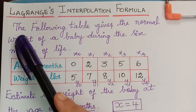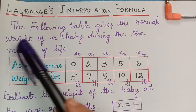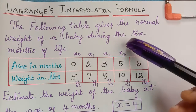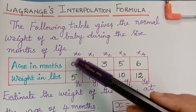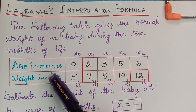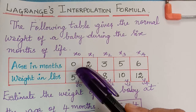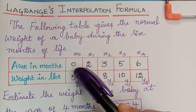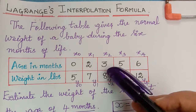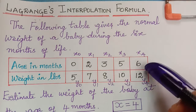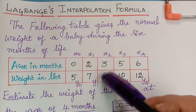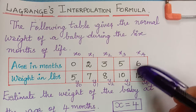Here we have a question which says that the following table gives the normal weight of a baby during the six months of life. The age in months is given: when the baby is a newborn, and then when it is two months old, three months old, five months old, and six months old. The corresponding weight of the baby are given here.